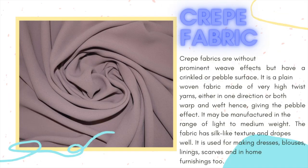Crepe fabric. Crepe fabrics are without prominent weave effects but have a crinkled or pebbled surface. It is a plain-woven fabric made of very high twist yarns, either in one direction or both warp and weft, giving the pebble effect. It may be manufactured in the range of light to medium weight. The fabric has silk-like textures and drapes as well. It is used for making dresses, blouses, linings, scarves, and home furnishings.